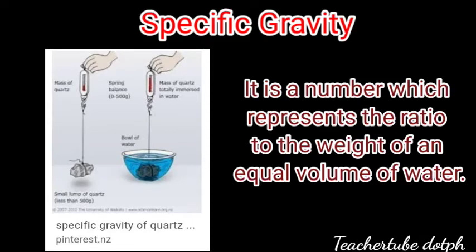The next physical property is specific gravity. It is a number representing the ratio of the weight of a mineral to the weight of an equal volume of water. Two weights are measured: first when the mineral is not submerged in water, and next when it is submerged in water. That ratio gives the specific gravity.